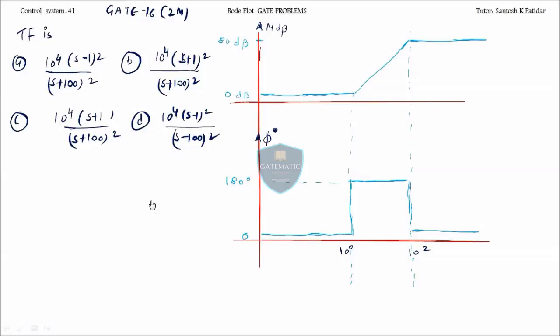Let's find out the transfer function. Transfer function K, the first slope we are getting at 10 to the power 0, that is at 1. And what we are getting? Two zeros. Why are we getting two zeros? Because the phase we are getting plus 180 degree. 90 degree provided by single zero. Plus 180 degree will be provided by two zeros.